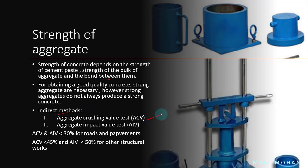Indirect methods are employed to determine the strength of aggregates: the aggregate crushing value test and the aggregate impact value test. The aggregate crushing value gives a relative measure of resistance of an aggregate to crushing under gradually applied compressive load, while the aggregate impact value gives a relative measure of resistance to a sudden shock. Aggregate crushing value and impact value less than 30% are recommended for roads and pavements. For other structural works, crushing value should be less than 45% and impact value should be less than 50%.